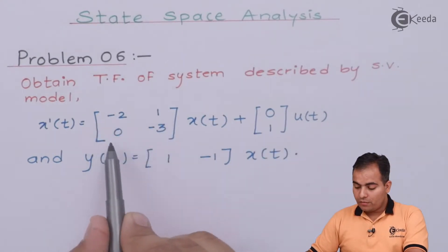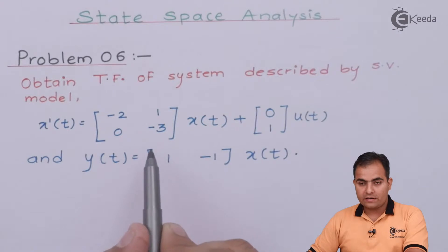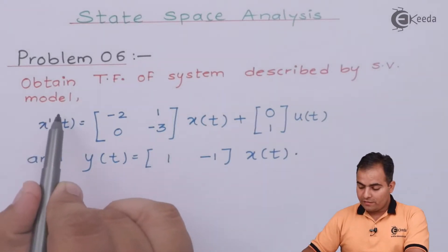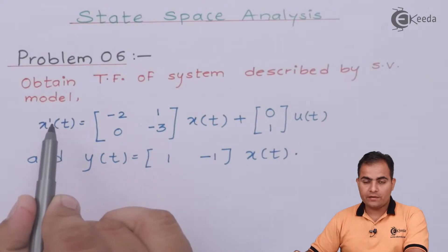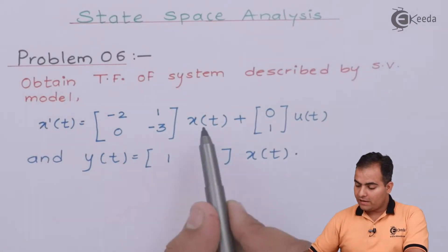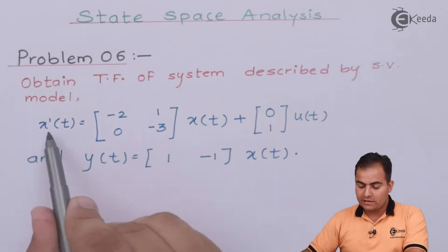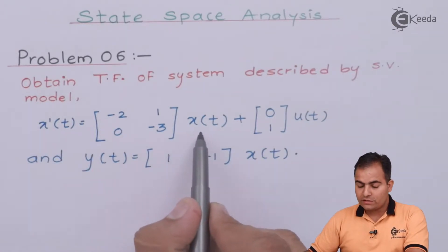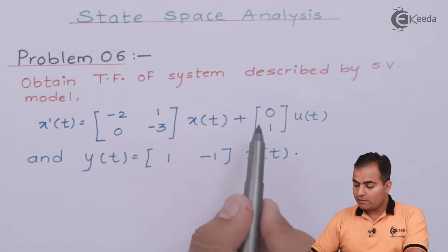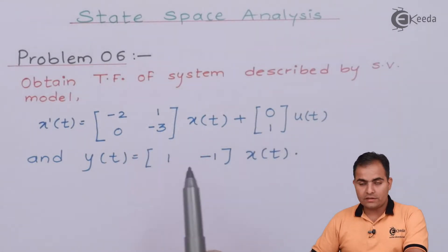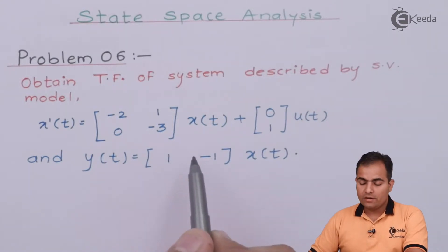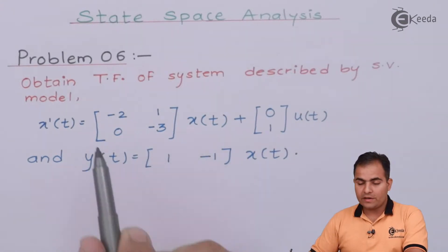Now look at the equation of this matrix — it is 2×2. Two cross two means on the left hand side we have two state variables where the highest degree of differentiation is one, and x(t) multiplied with x-dot(t) also has two state variables. From all these matrices you can get the idea of how many state variables are in the question.